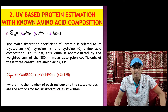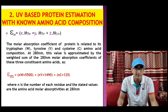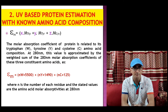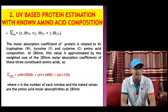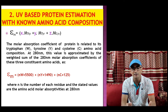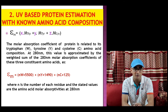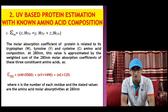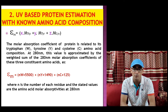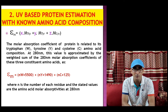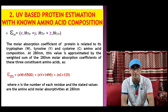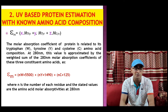If the extinction coefficient is not available for a protein but we know the number of amino acids present in the protein, that information can also be used to calculate the molar extinction coefficient. This is because the molar absorption coefficient of a protein is related to its tryptophan, tyrosine, and cysteine amino acid composition. Since the molar absorption coefficients of these three amino acids are known, if we know the number of these amino acids in a protein, the molar absorption coefficient of that protein can be calculated.